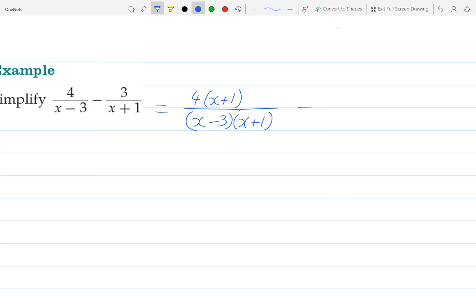And then we'd have minus 3 times (x-3) divided by (x-3) times (x+1). Here you can see that I've multiplied this fraction by (x-3) over (x-3).